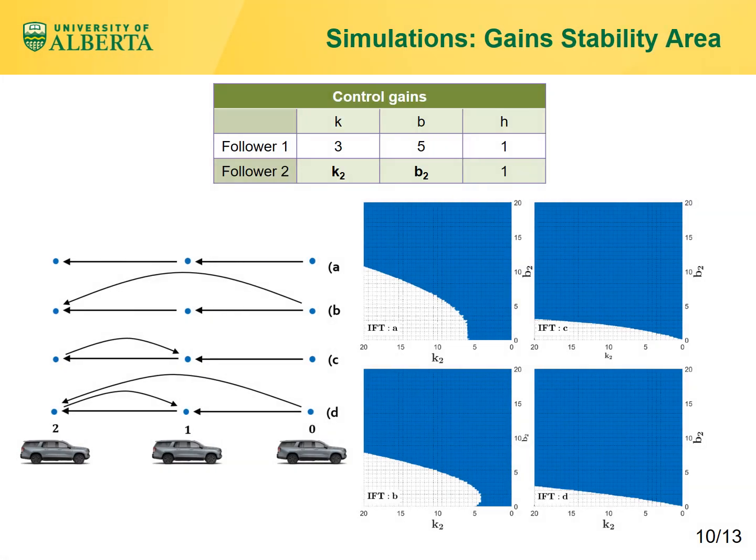We choose k=3, b=5, and h=1 for follower 1, and h=1 for follower 2, but we let k and b for follower 2 be obtained according to the criteria mentioned in the previous slides. The stability areas are given for four IFTs where b and k are axes of plots. As you can see, the area for IFT-d is larger than the other IFTs.